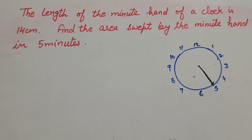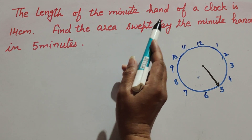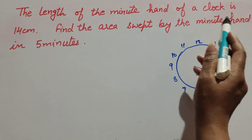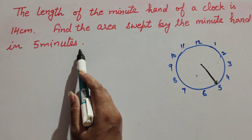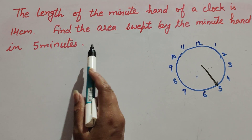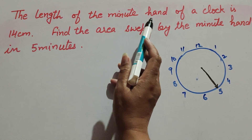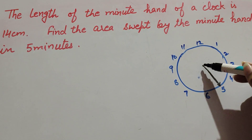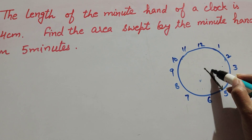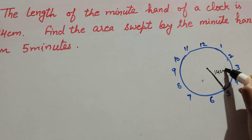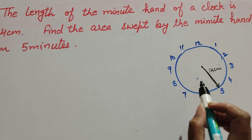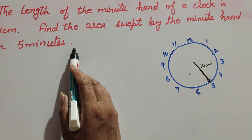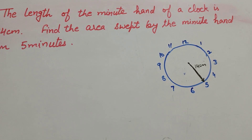Hello friends, welcome to my channel. In this video we discuss: the length of the minute hand of a clock is 14 centimeters. Find the area swept by the minute hand in five minutes. The given information is the length of the minute hand of the clock is 14 centimeters, and we need to find the area covered by the minute hand in five minutes.